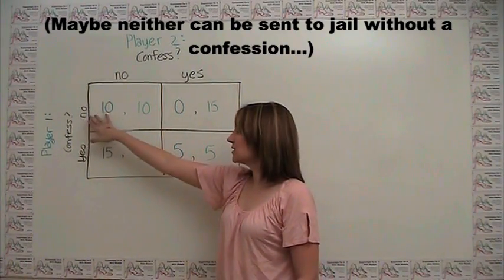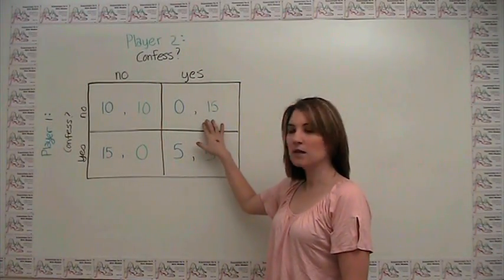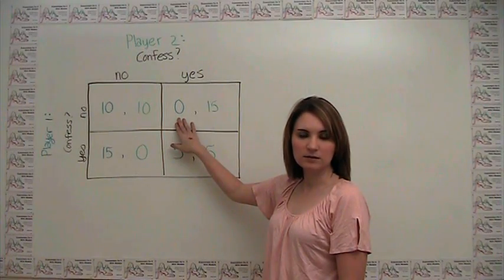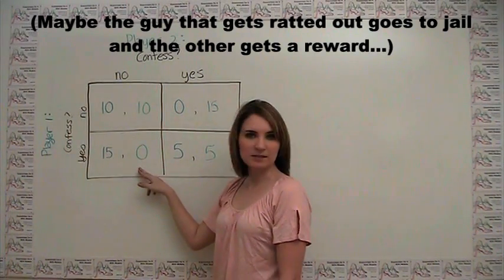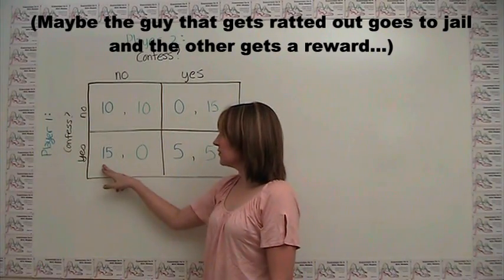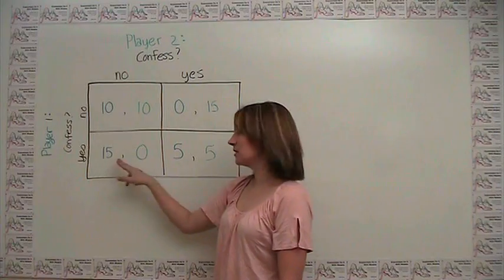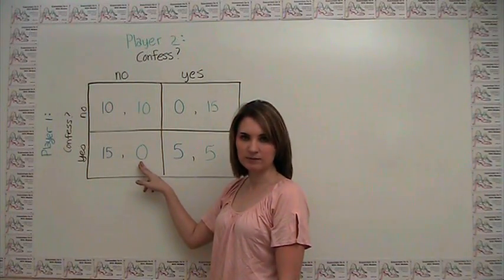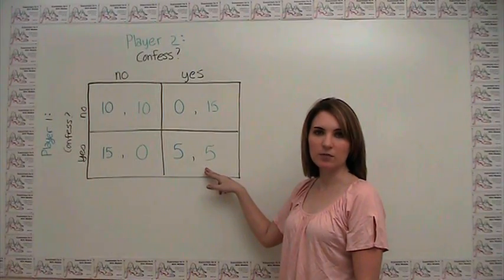If the first guy keeps quiet and the second guy rats him out, the second guy gets 15 while the first player gets nothing. The opposite happens here. If the first player rats out the second one, now the first player gets 15 and the second player gets nothing. And if they both try to rat each other out, they both end up with 5.